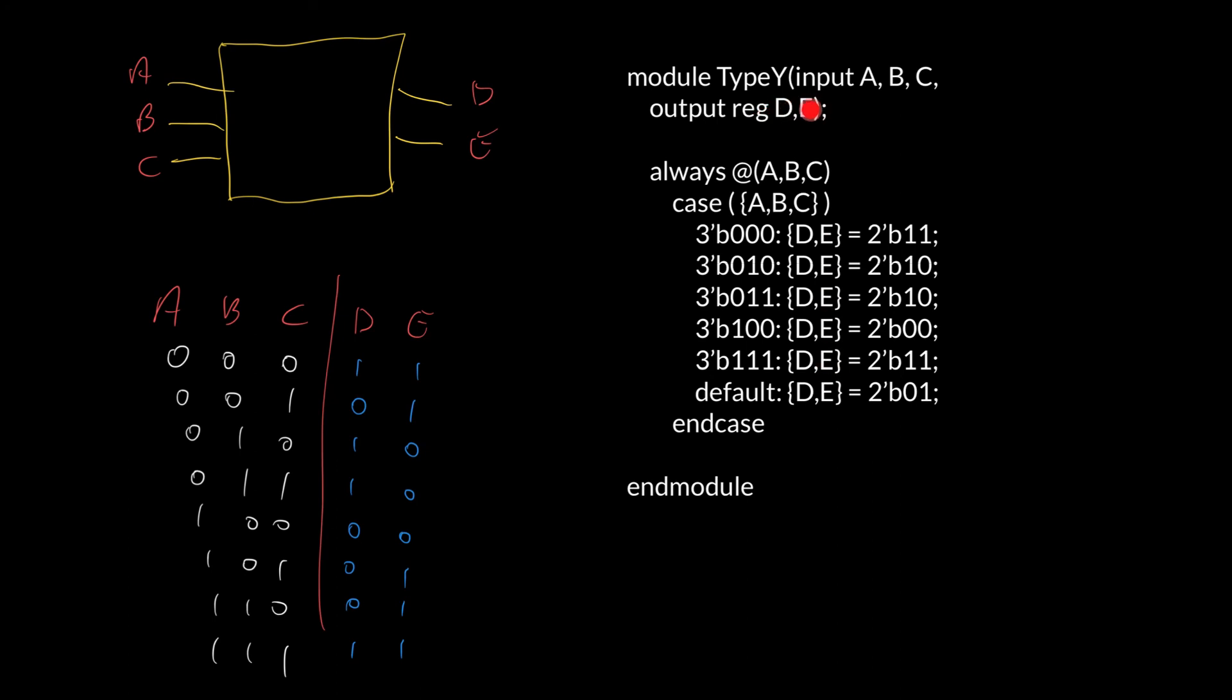And finally, because we're making an assignment inside this always block then we have to declare D and E as registers. That tells Verilog that the values of D and E can be changed through some type of equal sign. Assign is special; any other type of equal signs and you have to have the left hand side a register.